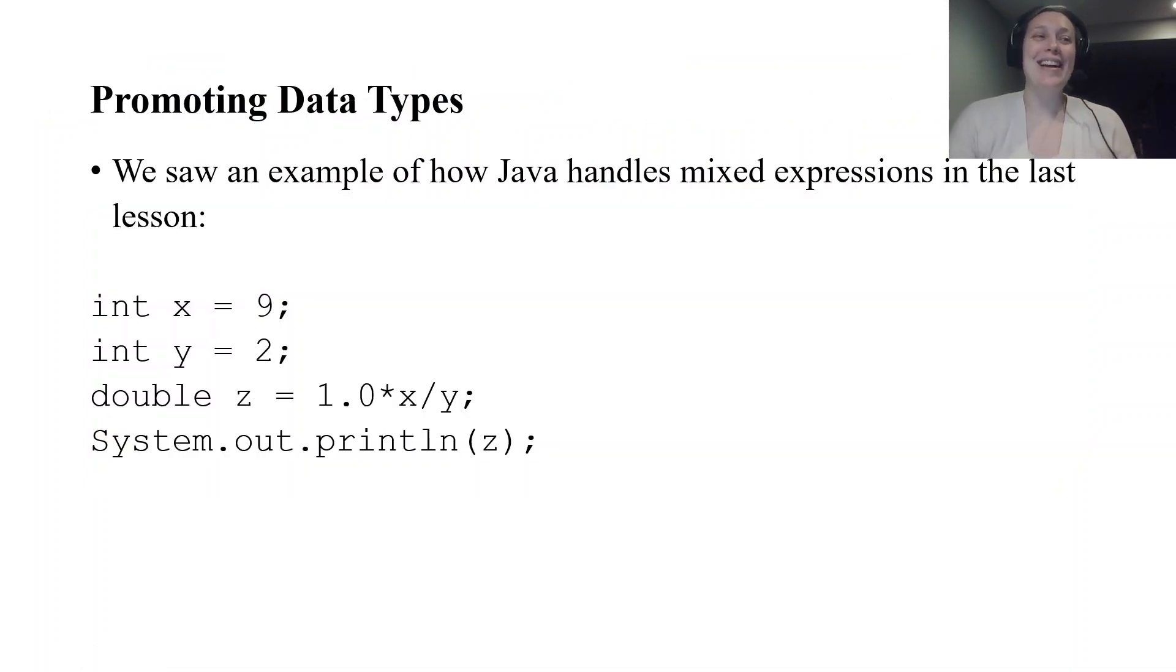We saw in our last lesson with arithmetic expressions how Java handles mixed expressions and how less complex data types are promoted temporarily into more complex data types and then the expression is evaluated. So something like this is what we saw in the last lesson. If X is 9 and Y is 2 and then I have a variable called Z which is going to store a double, I have this 1.0 times X divided by Y.